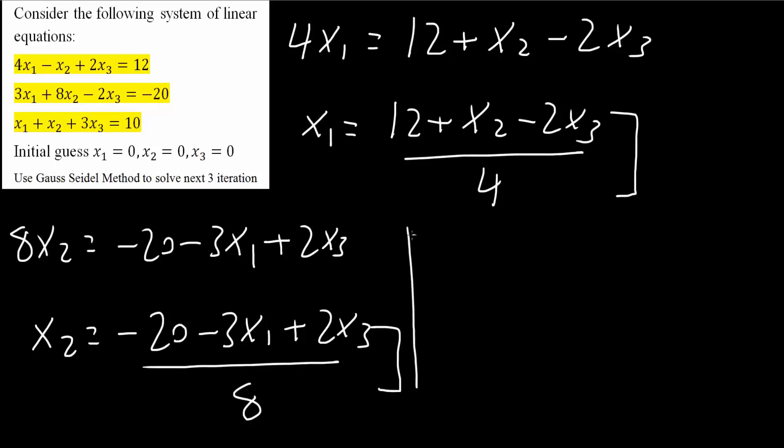And finally, we'll do x3. So x3 is kind of simple. We can say that x3 is equal to 10 minus x1 minus x2 divided by 3. And so if you want right now, you can pause the video here and write down what we have.